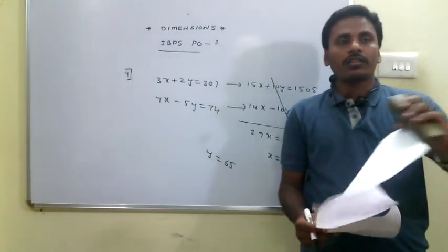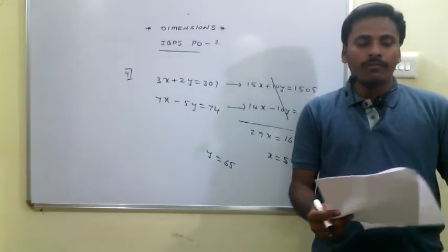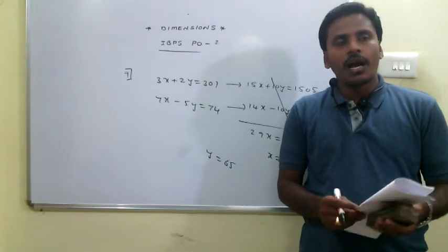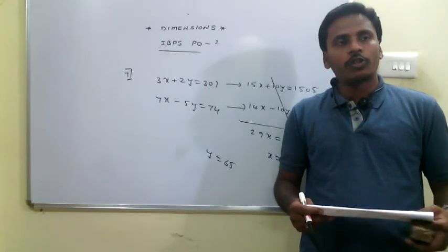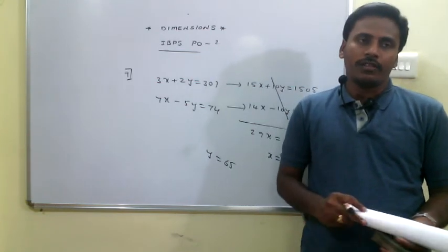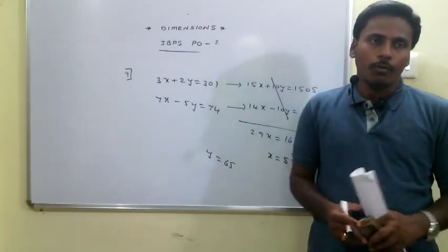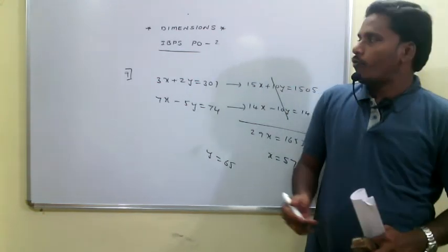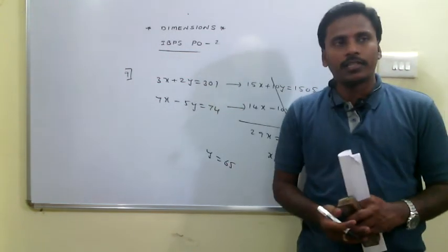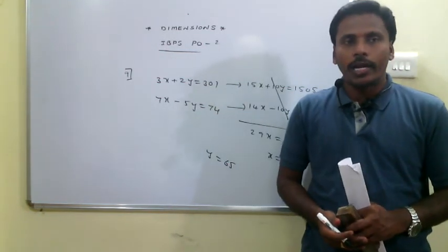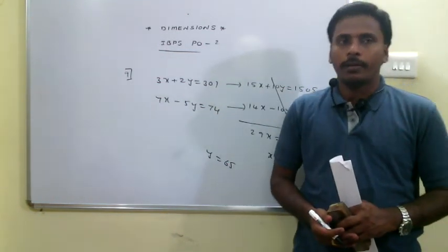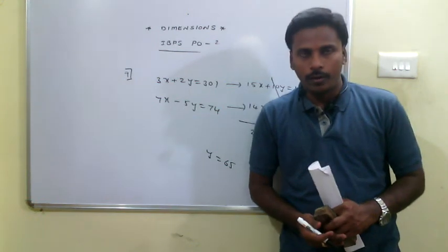In the same pattern, we solve the tenth problem involving quadratic equations, find values of x and y, and compare them. This completes the explanation for the quantitative questions from the IBPS PO second paper. Thank you very much.